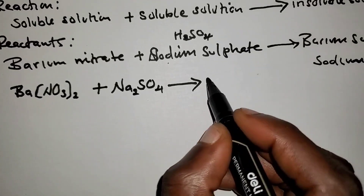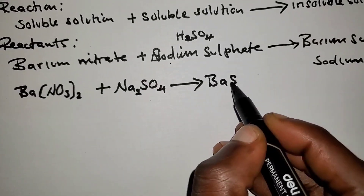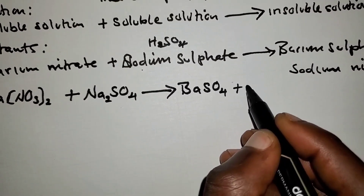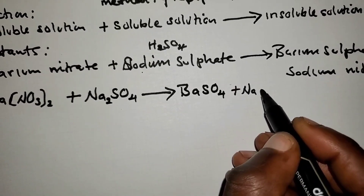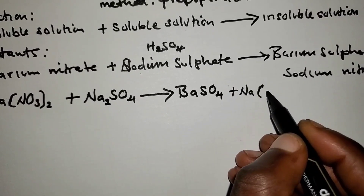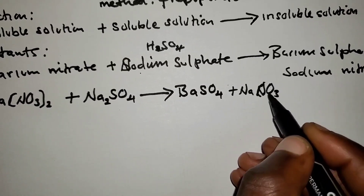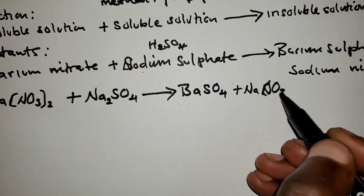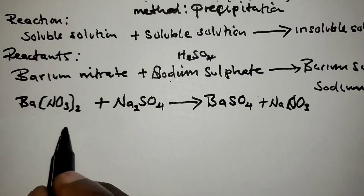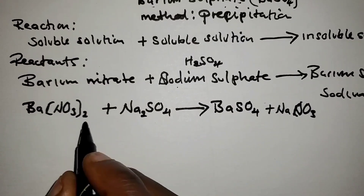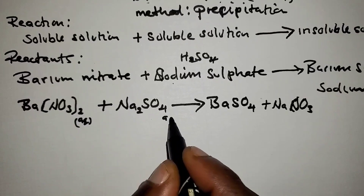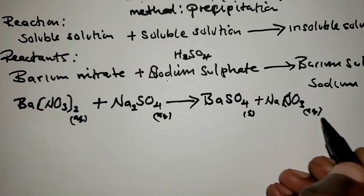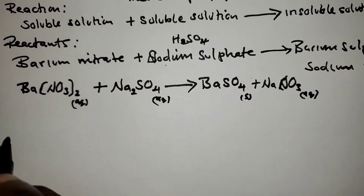The products are barium sulfate, BaSO₄ — barium has valence two so it's BaSO₄ — and sodium nitrate, NaNO₃, since sodium has valence one and nitrate has valence one. For state symbols: the reactants are aqueous, barium sulfate is a solid precipitate, and sodium nitrate is aqueous.